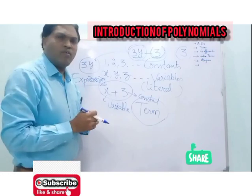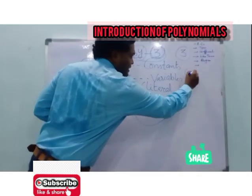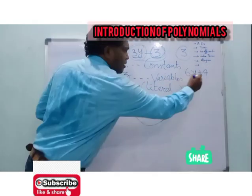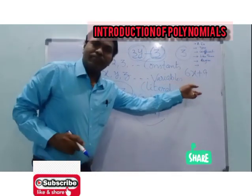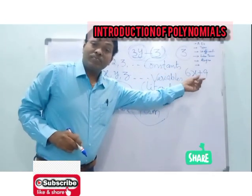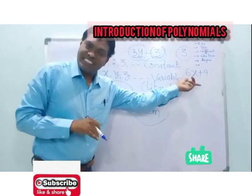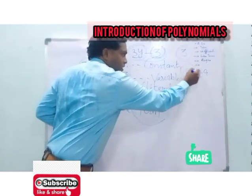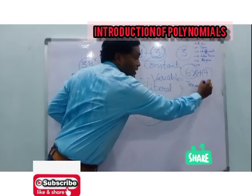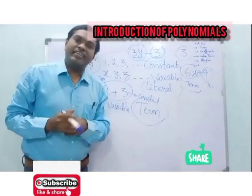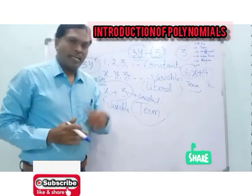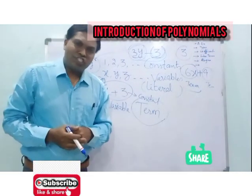Let us take one more example: 6x plus 9. Here also we have two terms. 6x is a term and 9 is also a term. So therefore, each part of an expression is called a term.